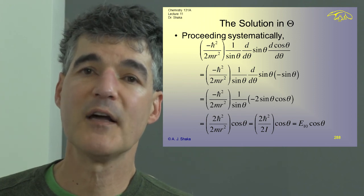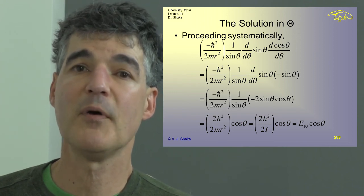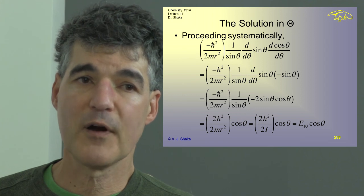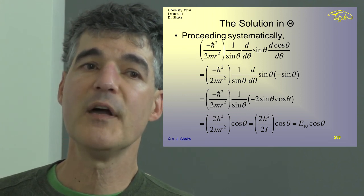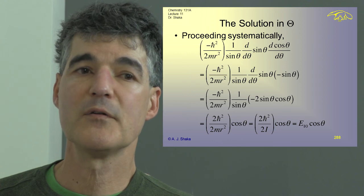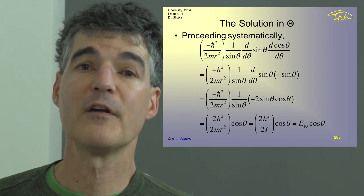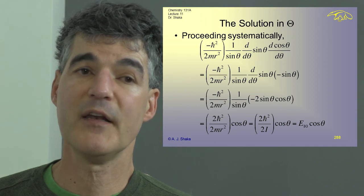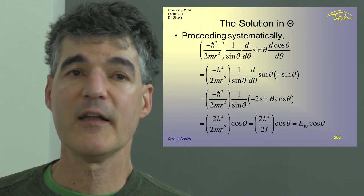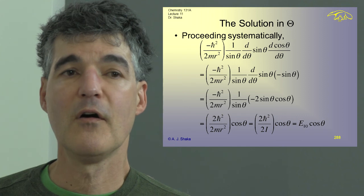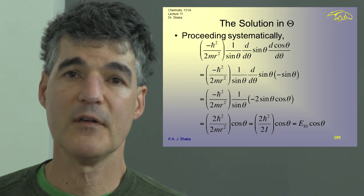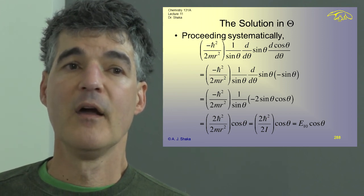I end up with 2 h-bar squared over 2mr squared times cosine theta, which equals 2 h-bar squared over 2I times cosine theta, equal to E(1,0) times cosine theta. Therefore, I've figured out the energy of this state: it's an eigenfunction and the eigenenergy is 2 h-bar squared over 2 times the moment of inertia, capital I — not the square root of minus 1.